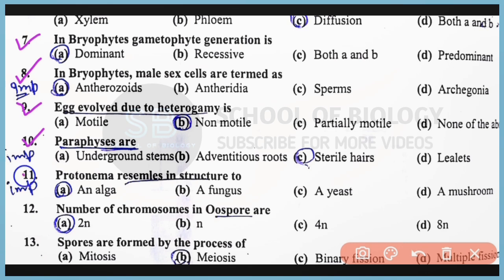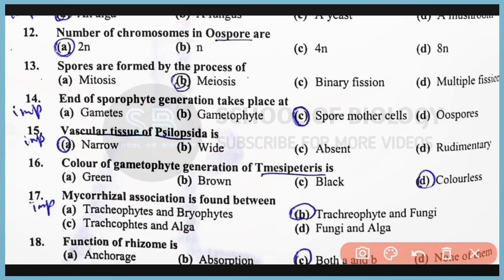Question Number 11: Protonema resembles in structure to an alga, and these protonema are present in mosses. The correct answer is Option A. Question Number 12: The number of chromosomes in a spore are diploid. The correct answer is Option A. Question Number 13: Spores are formed by the process in mosses. The correct answer is Option A.